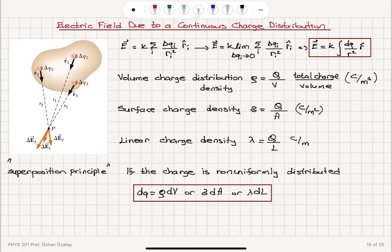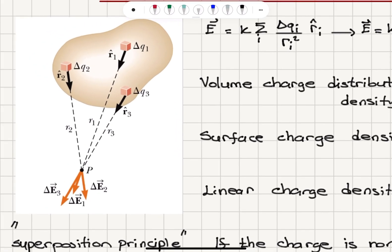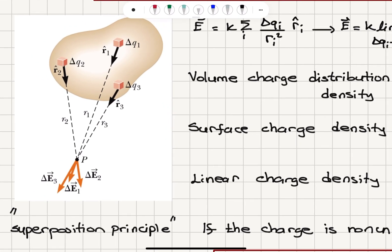Now we will consider what happens if we have a continuous distribution of charges instead of a discrete distribution. So to generalize to continuous distribution, let's say that we have this arbitrarily shaped object which has charges delta Q1,